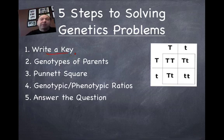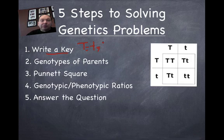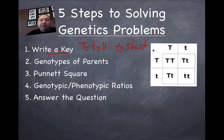Typically in the problem, they'll tell us that one trait is dominant over another. So in this case, we would write that big T equals tall and little t equals short. That's as simple as what a key is — just telling us what each of these letters represent: what does big T represent versus what does little t represent?